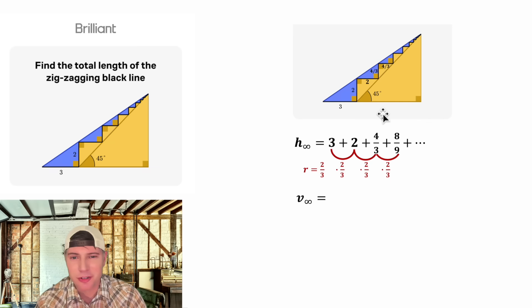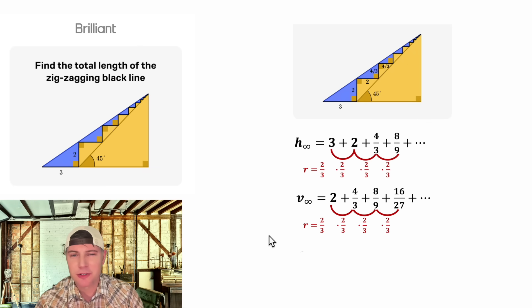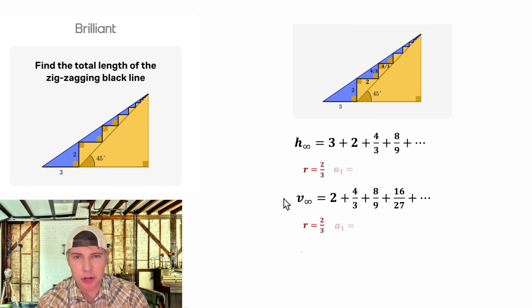And then we can do the same thing for the vertical sum. It'll be two plus four-thirds plus ends of being eight-ninths ends of being sixteen twenty-sevenths and so on. And the same thing, we're multiplying by two-thirds each time. So this one also has an r of two-thirds. Now there's one other thing that's important about infinite sums. That's the first term a sub one. The a sub one for this sum is three and the a sub one for this sum is two.